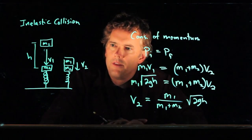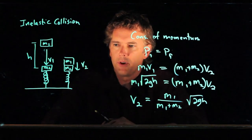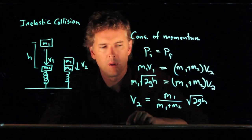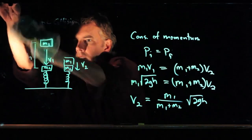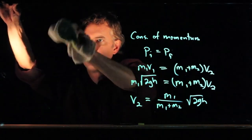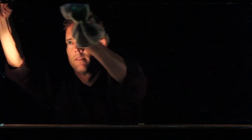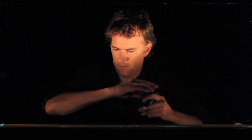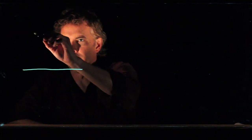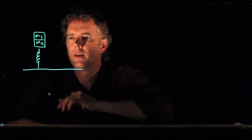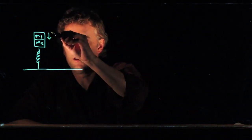All right, let's now take it a step further and see if we can figure out what the amplitude of oscillation of this spring system is, this block spring system. So our initial picture now looks like this, we have the two blocks right on top of each other, and they are heading down at V2.